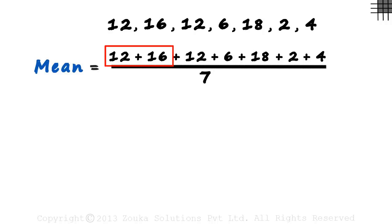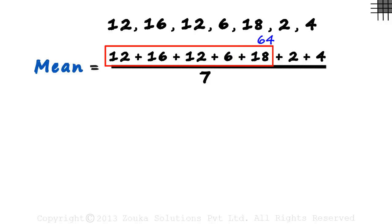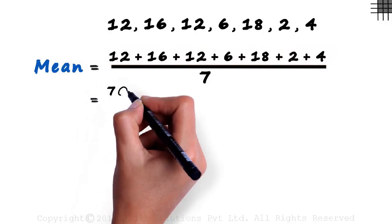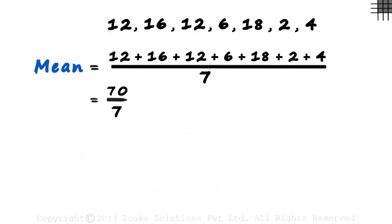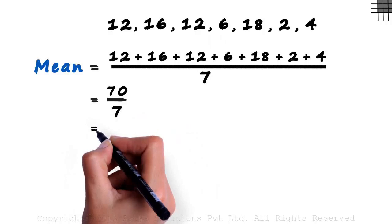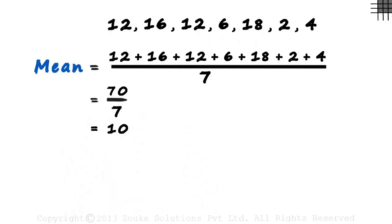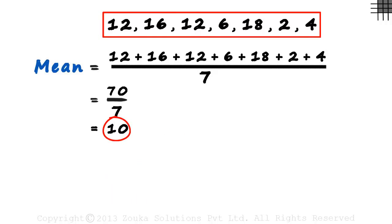12 plus 16 is 28. 28 plus 12 is 40. 40 plus 6 is 46. 46 plus 18 is 64. And 64 plus 6 is 70. So the mean would equal 70 divided by 7. That gives us 10. So the mean of these seven numbers is 10.